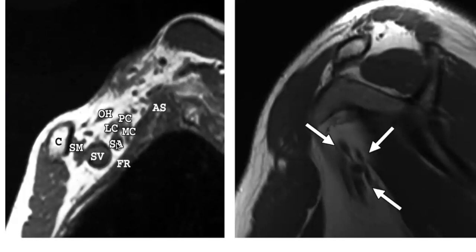This is the oblique axial image here. This is the subclavian artery and the subclavian vein. The cord which is medial to it is the medial cord, the lateral cord is lateral to it, and this is the posterior cord. This is the image obtained somewhat laterally at the level of the axilla. Again, the medial cord, posterior cord, and lateral cord are identified in relation to the subclavian artery.